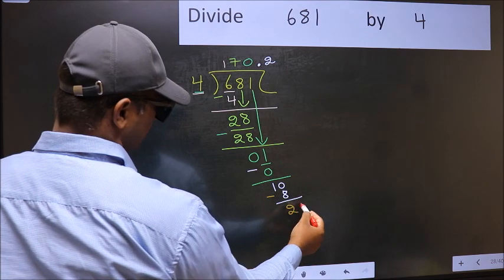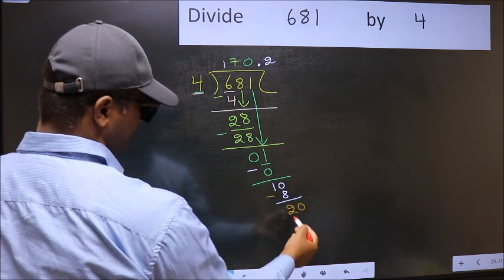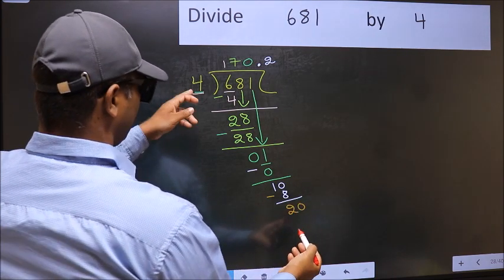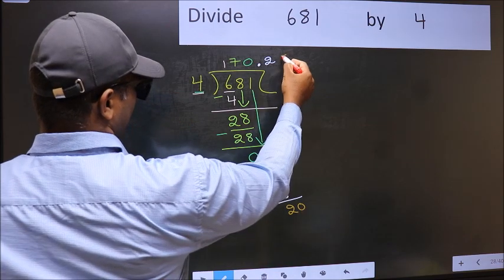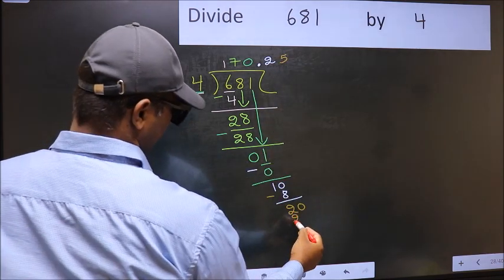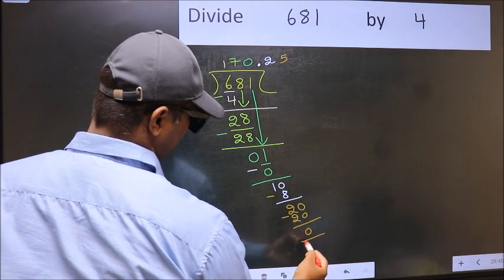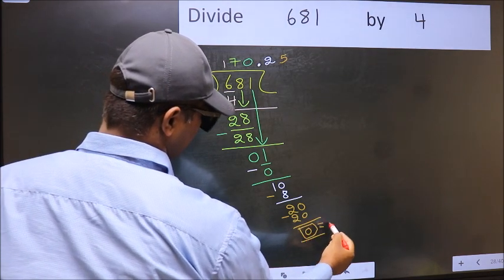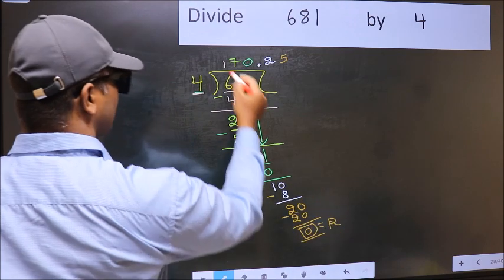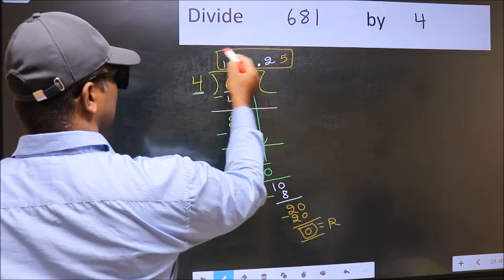We already have decimal. So directly take 0. When do we get 20 in 4 table? 4 fives, 20. Now you subtract. You get 0. So this is our remainder. And this is our quotient.